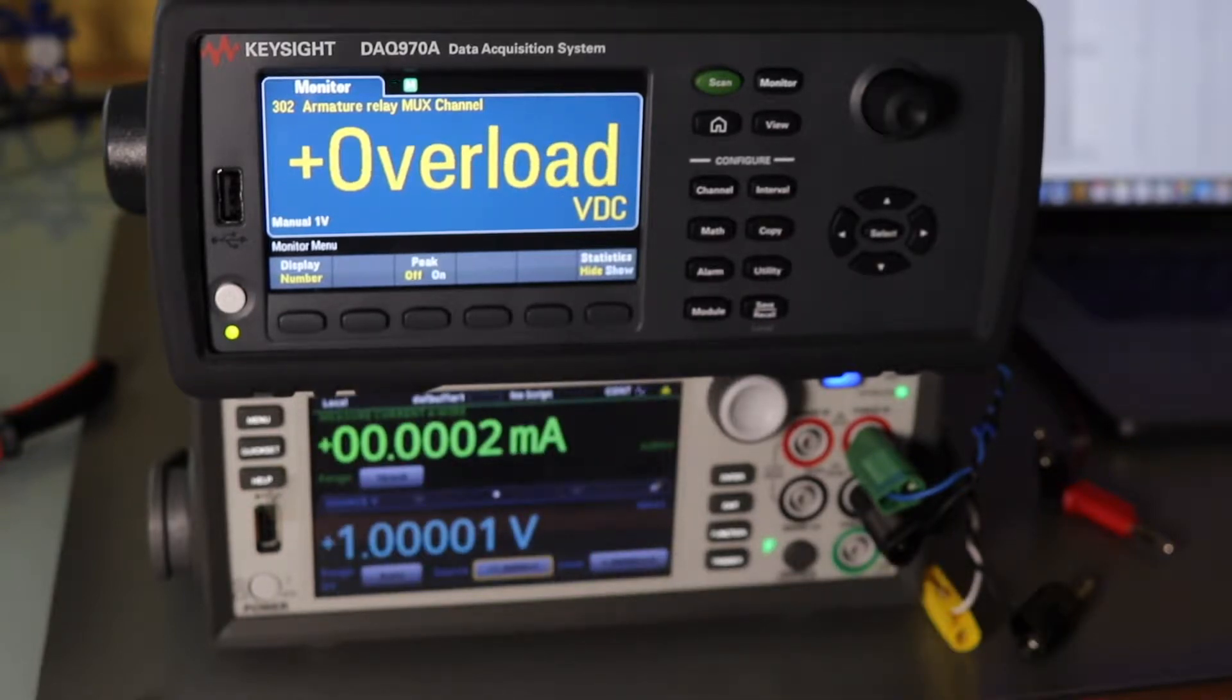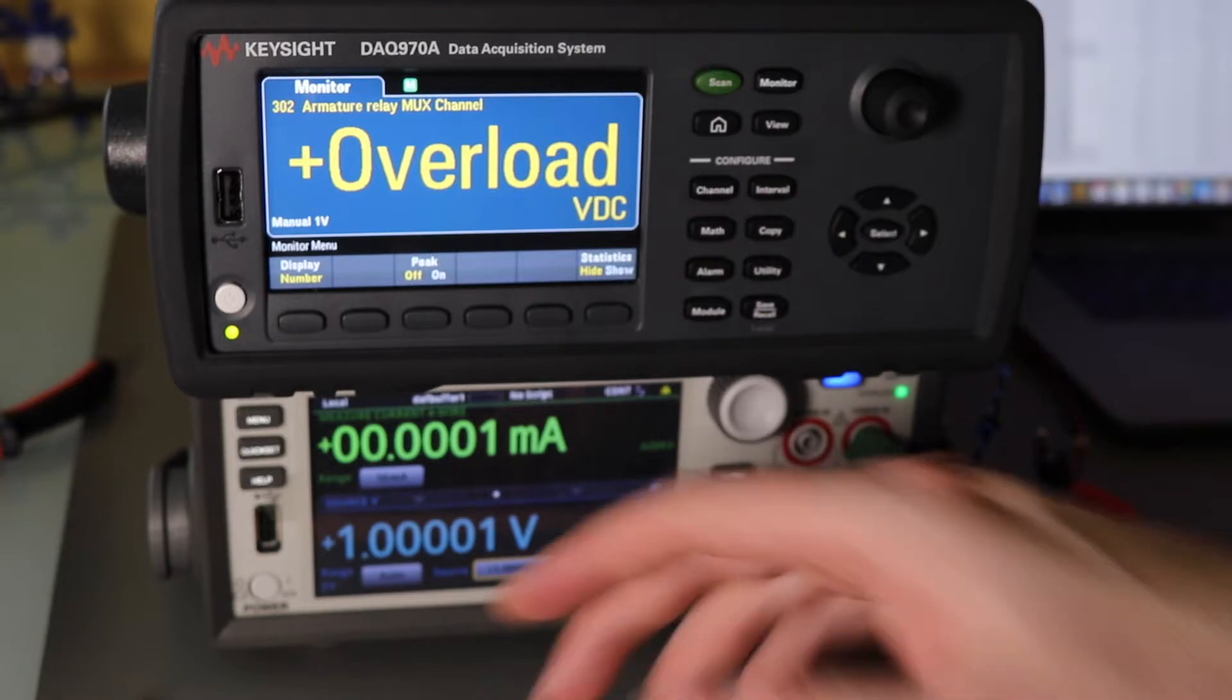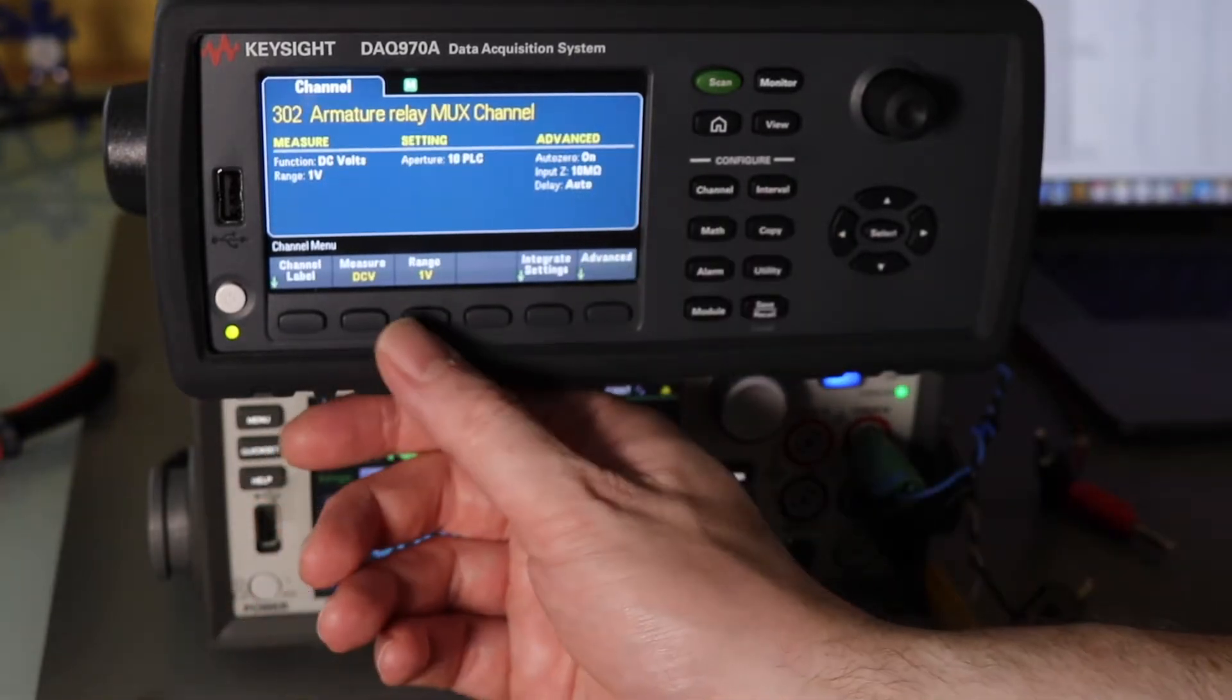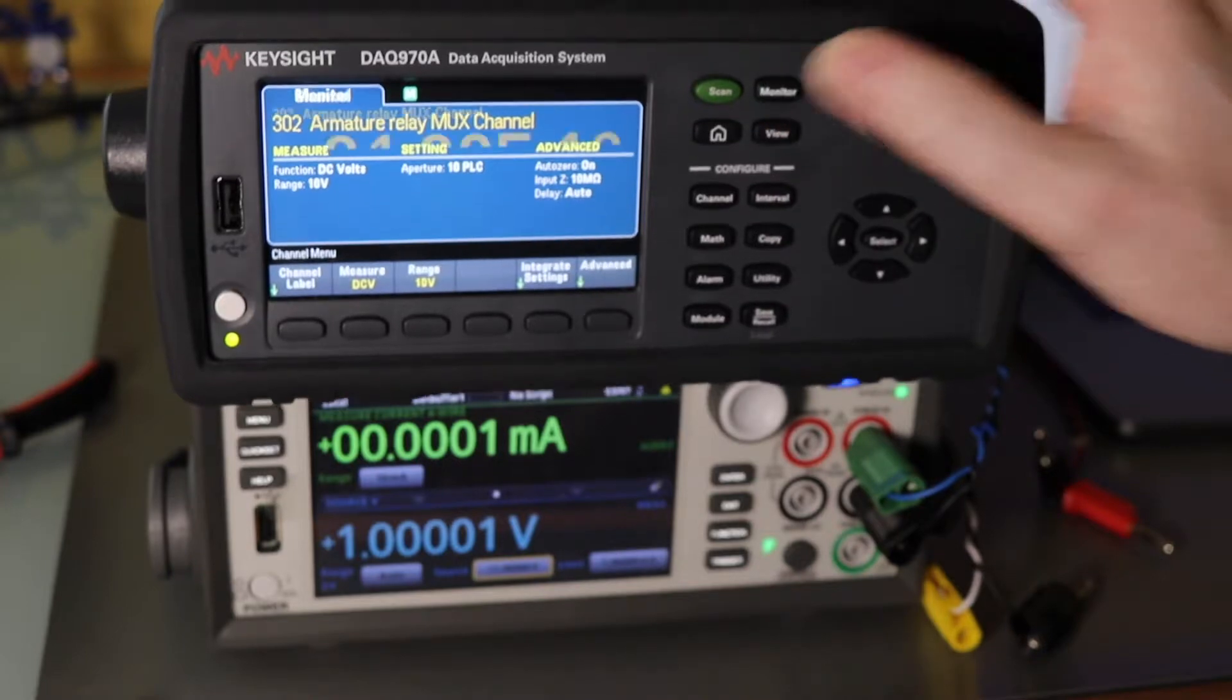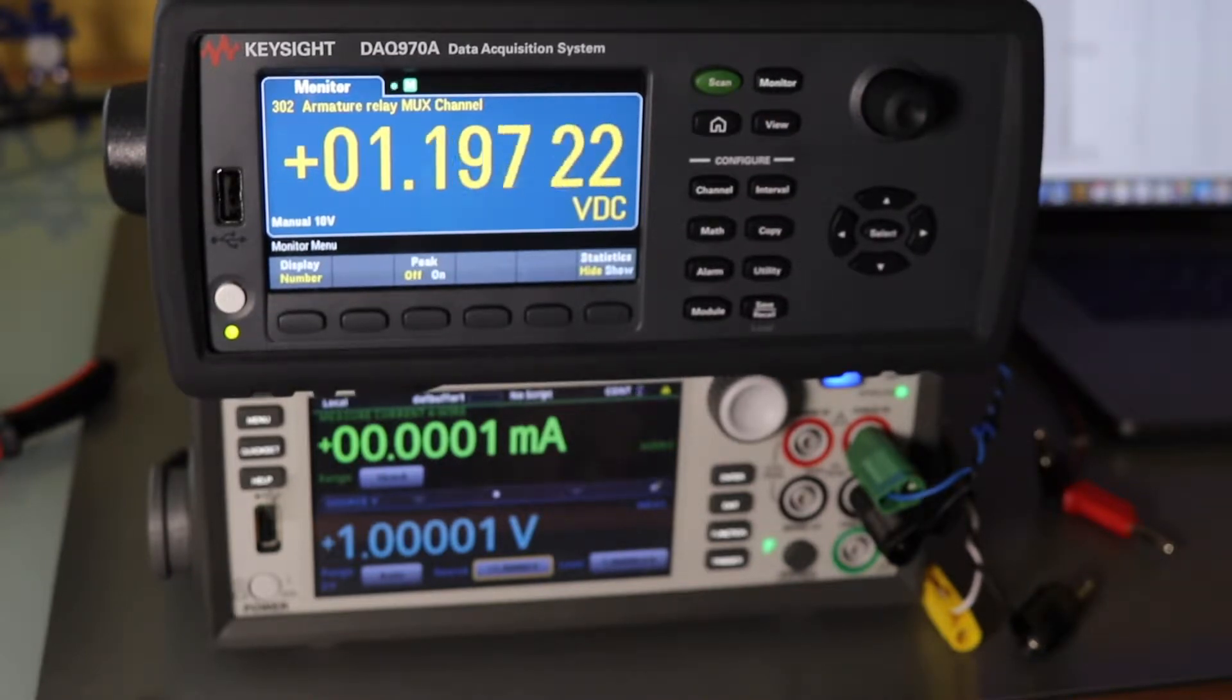And again he goes overload. If I take him up to 10 volt range, because he's 1.2 volts on my reading, I will set up another meter and we'll see what he gives.